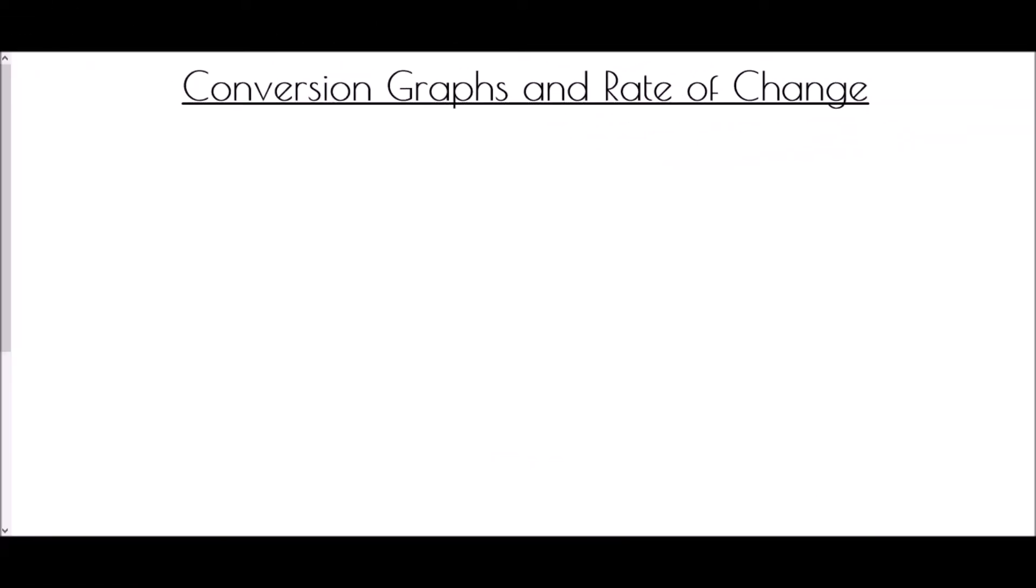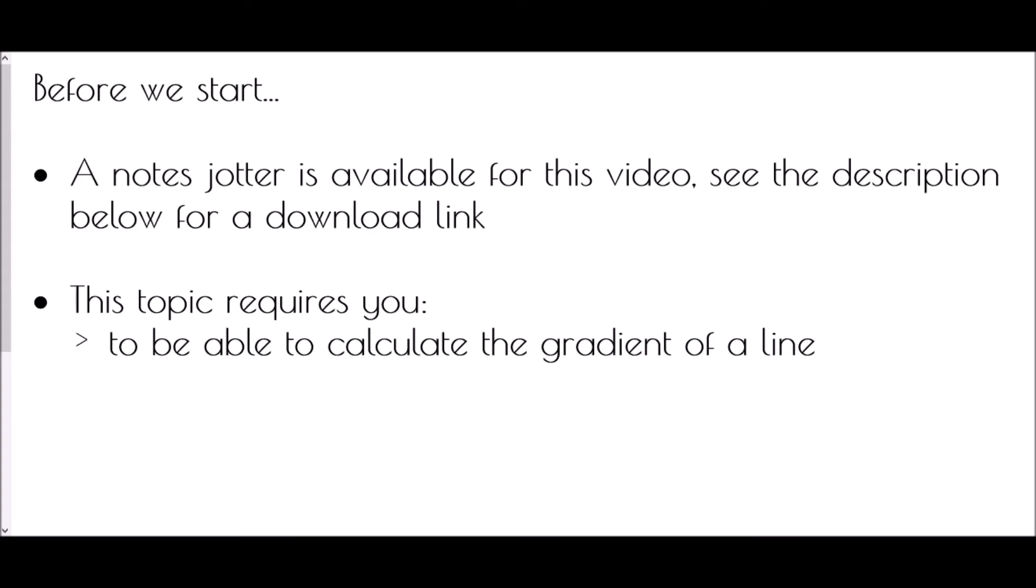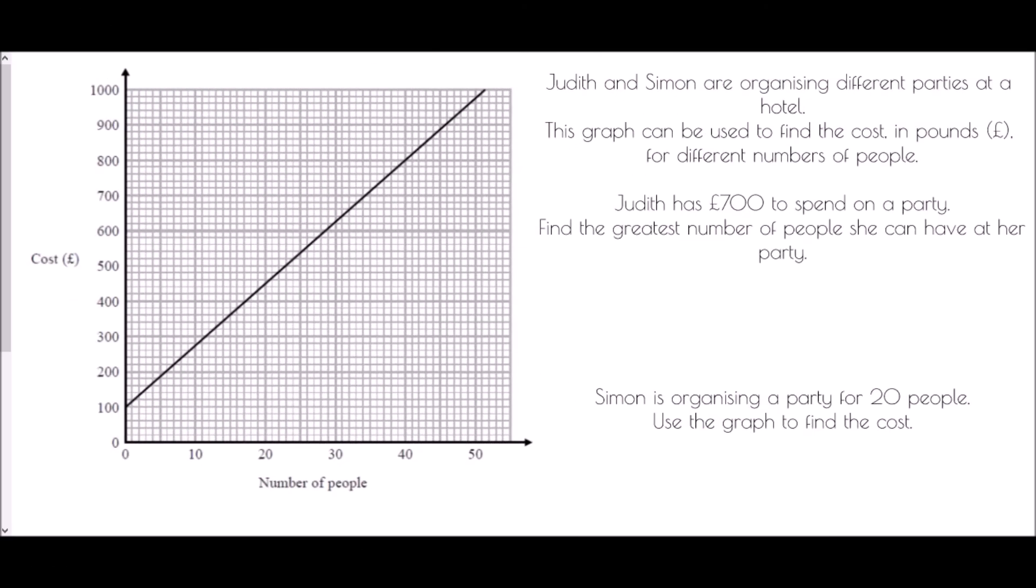Hi and welcome to Conversion Graphs and Rate of Change. Just before we start, a quick reminder that there is a note sheet available for this video - check the description below for a download link and you can work along with me. Our first conversion graph shows how to convert a number of people into a cost for organizing a party at a hotel. This graph can be used to find the cost in pounds for different numbers of people. Judith has £700 to spend on a party. We need to find the greatest number of people she can have at her party.